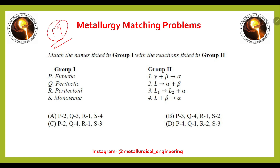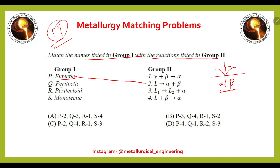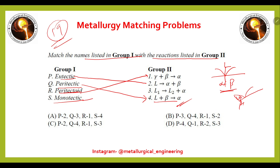The 19th matching problem asks to match reaction names with their corresponding phase reactions. Eutectic matches with liquid giving alpha plus beta. Peritectic matches with liquid plus beta giving alpha, as seen in the iron-carbon diagram. Peritectoid matches with two solids giving another solid, and monotectic matches with one liquid giving another liquid plus one solid. The right answer is option C.